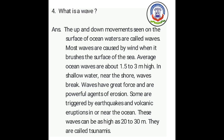Some waves are triggered by earthquakes and volcanic eruptions in or near the ocean. (Kuch bhucamp aur jwaalaamukhi visfot se, ya samudra ke paas se shuru hote hain.) These waves can be as high as 20 to 30 meters. (Yeh tarangein 20 se 30 meter tak unchi hoti hain.) They are called tsunamis. (Unhein tsunami kaha jaata hai.)